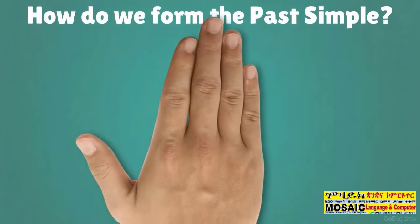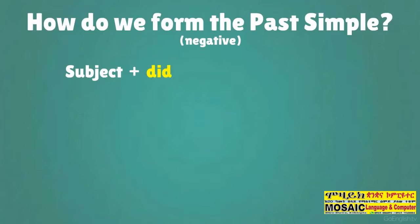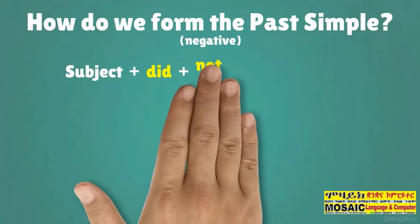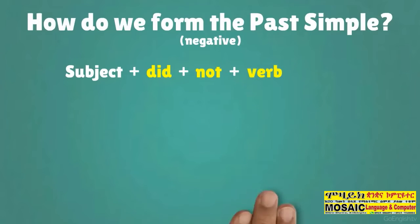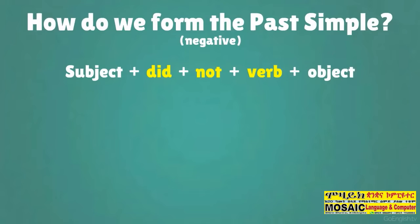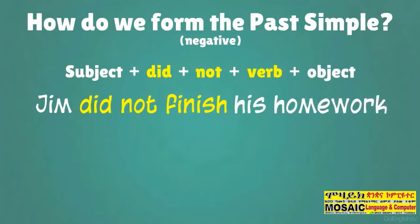How do we form the past simple negative? Subject plus did plus not plus verb plus object. Jim did not finish his homework.